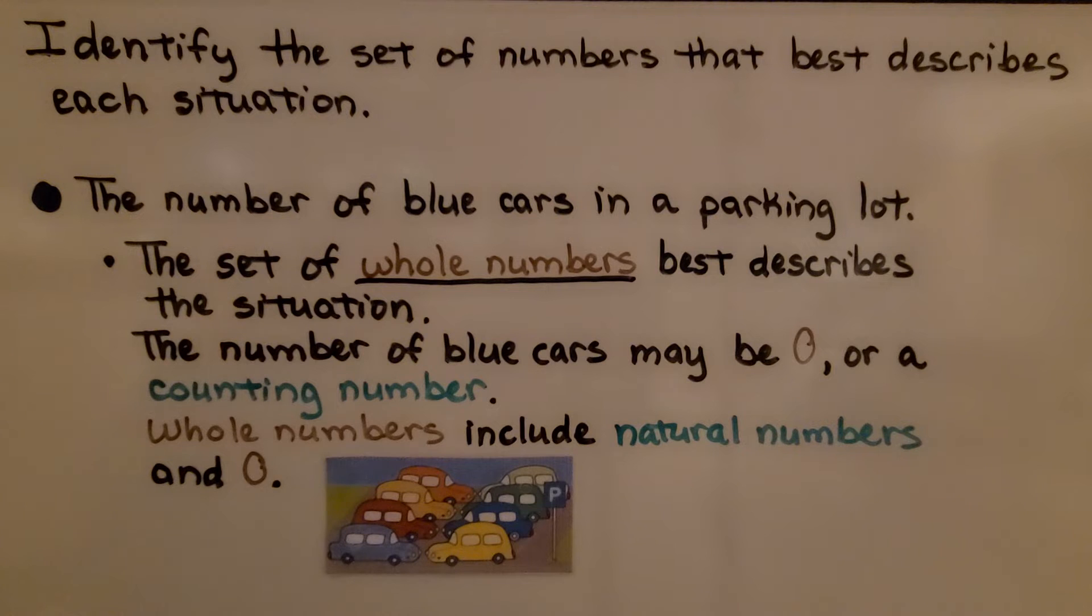Here it's telling us to identify the set of numbers that best describes each situation. The number of blue cars in a parking lot, that's our situation. Well, the set of whole numbers best describes the situation. The number of blue cars may be zero or a counting number. Whole numbers include natural numbers and zero. Remember, natural numbers are the counting numbers, and whole numbers are the natural numbers, including zero.